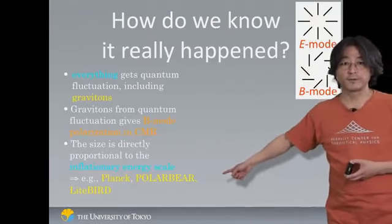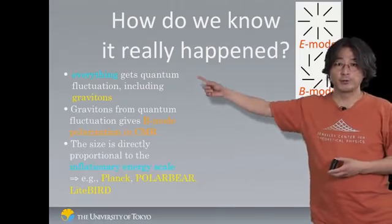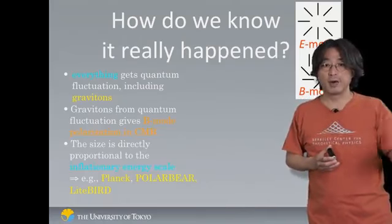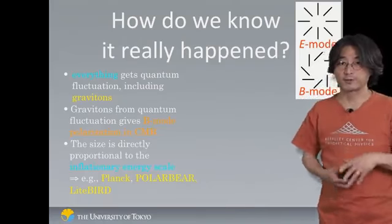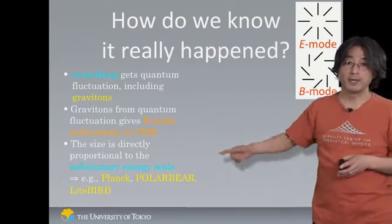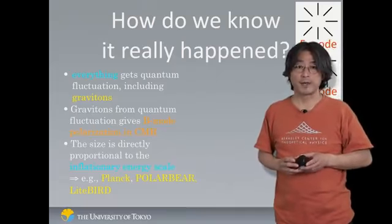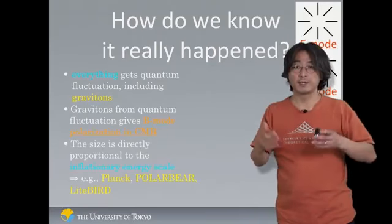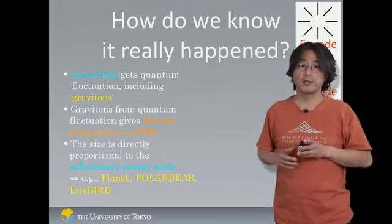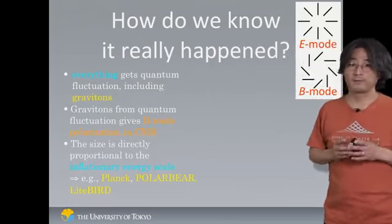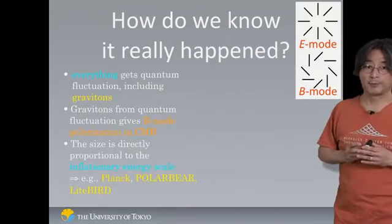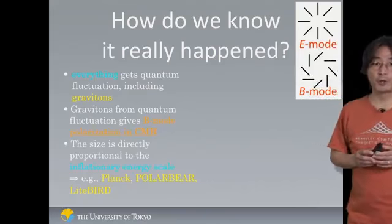And there are many experiments that try to do so. And here's a partial list of those experiments. So just to repeat, everything gets this quantum noise, including gravitons, which is the fluctuation of space and time. And that will lead into this B-mode polarization of cosmic microwave background. And how big that fluctuation is, how big this B-mode is, is directly tied to the energy scale when inflation happened, which is the same thing as saying when it happened.